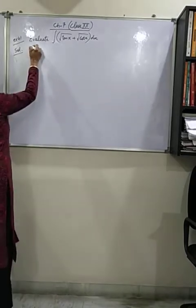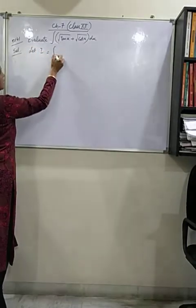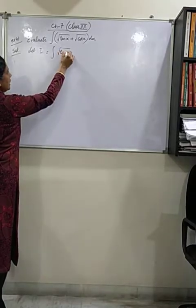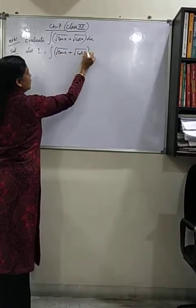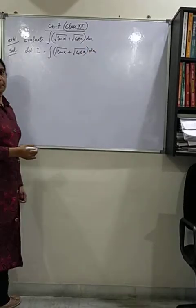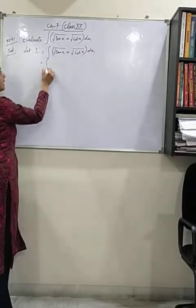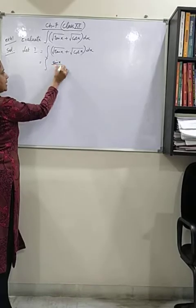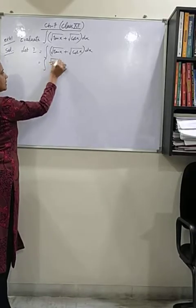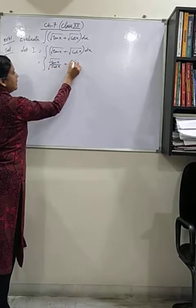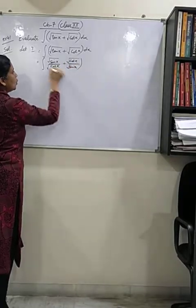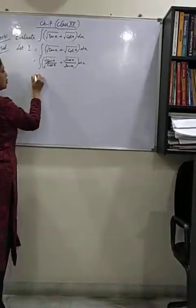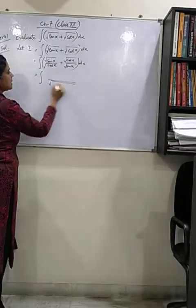First of all, let us take integral I as root of tan x plus root of cot x dx. Let's simplify it in terms of sin x and cos x and then take the LCM. I hope everyone knows how to take the LCM, that's a simple step.